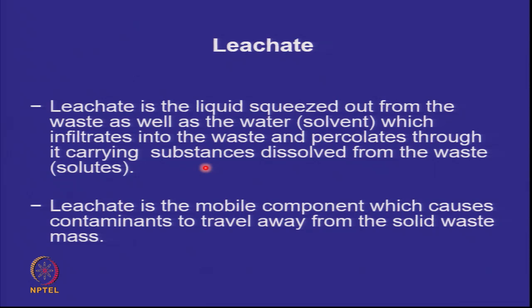Water becomes a solvent — whatever is soluble will get into the water and come down with it. Leachate is the mobile component which causes contaminants to travel away from the solid waste mass. If there was no leachate, nothing would move out in the liquid phase. There could be dust, particles, or gaseous emissions, but leachate is the mobile component as far as surface water or groundwater pollution is concerned.